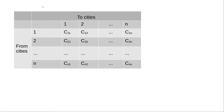The cost of travel from city to city is given in the table. If you want to travel from city number 1 to city number 2, the cost of travel is going to be C12. If you wish to travel from city number 2 to city number N, the cost of travel is going to be C2N. Similarly, if you want to travel from city N to city number 2, the cost of travel is going to be Cn2.